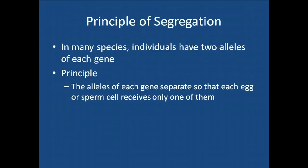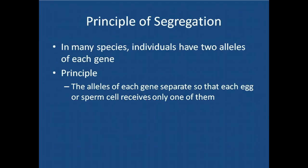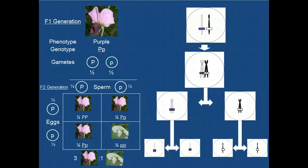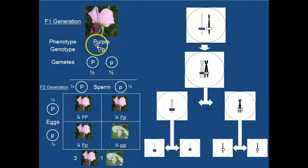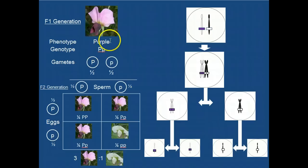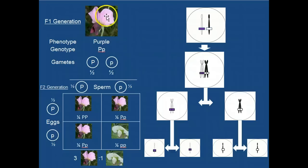Remember that the principle of segregation states that the alleles of each gene separate so that each egg or sperm cell receives only one of them. This is particularly evident if you think about how it is that this F1 individual who is heterozygous — who has a heterozygous genotype but has a phenotype that is purple — produces gametes.